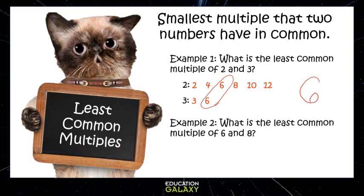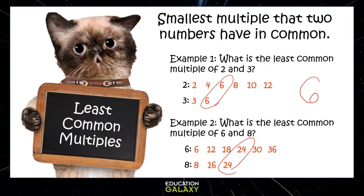Let's check out example 2. What is the least common multiple of 6 and 8? Let's list the multiples of 6: 6, 12, 18, 24, 30, 36, and so on. Now for 8: 8, 16, 24. 24 was in the multiple list of 6 too — it's the first multiple they have in common. So the least common multiple must be 24.